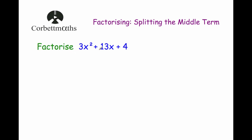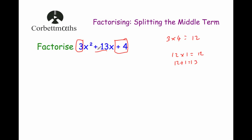Our next question says: factorise 3x squared plus 13x plus 4. Again, we multiply the coefficient of the first term — the 3 — by the constant on the end, so 3 times 4 is equal to 12. The middle term is 13, and we're looking for two numbers which multiply together to give 12 and add together to give 13. That's going to be 12 and 1, because 12 times 1 equals 12 and 12 plus 1 equals 13. One thing to note: it doesn't actually matter which way around you split the middle term — you'll always get the same answer.